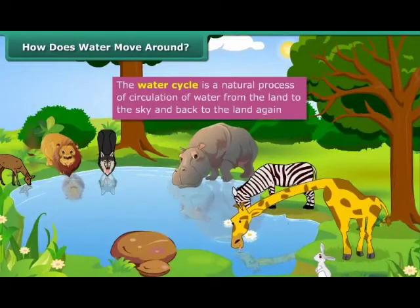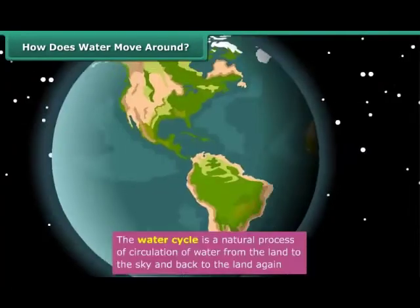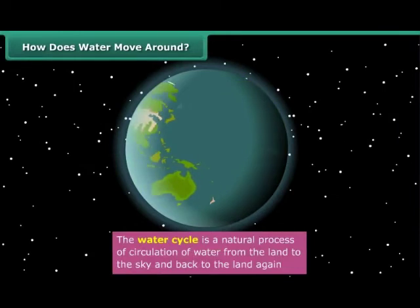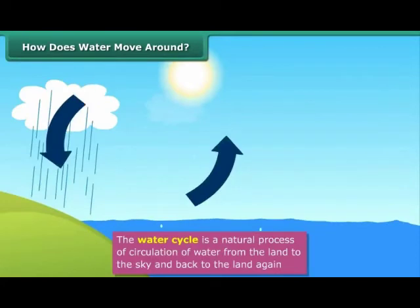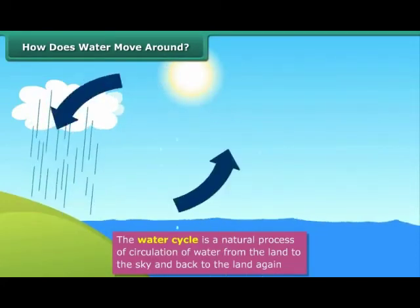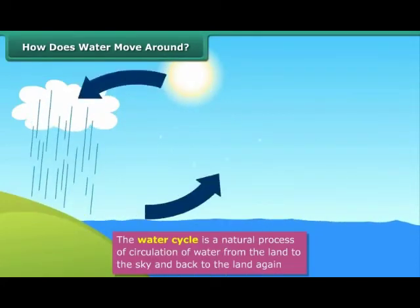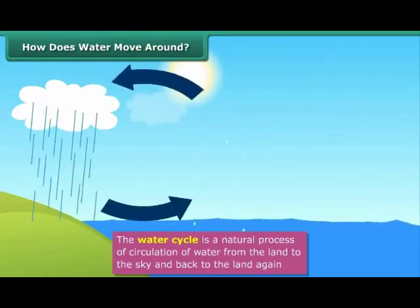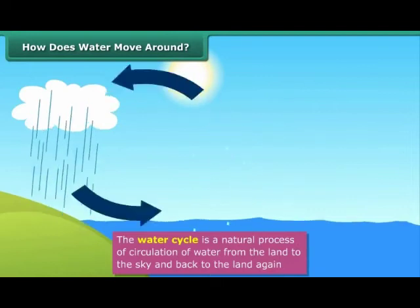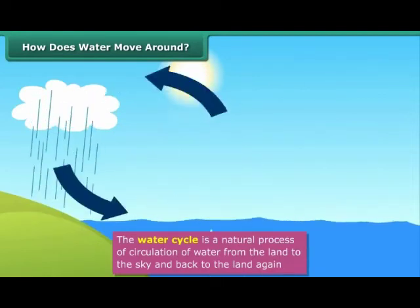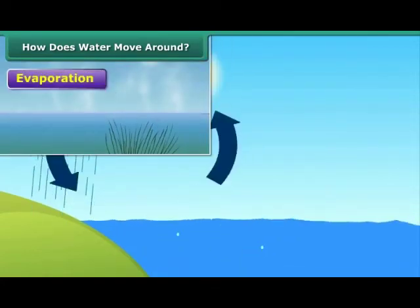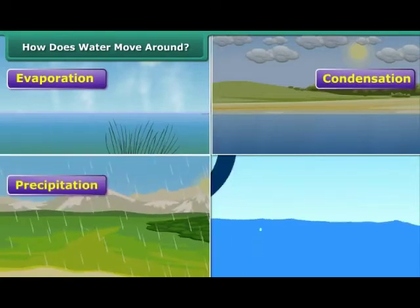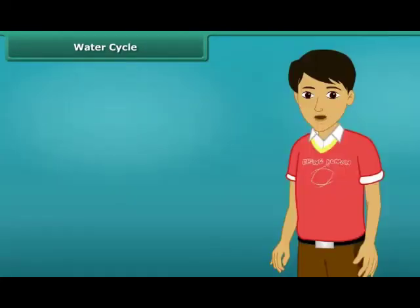Have you wondered how, despite the consumption of water by living things on Earth for hundreds of years, the balance of water on the planet has been maintained? It is the water cycle which makes it possible. The repeated changing of water in nature from liquid to gaseous form and then back to liquid form is called the water cycle. There are four main steps: evaporation, condensation, precipitation and collection.